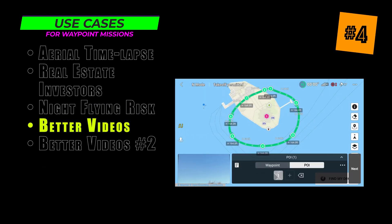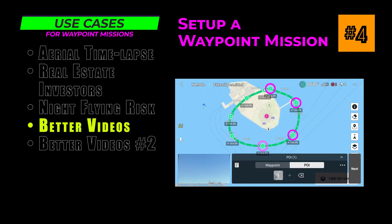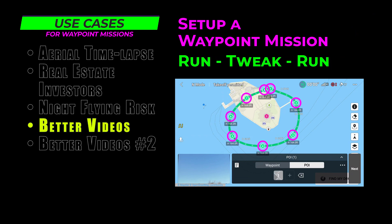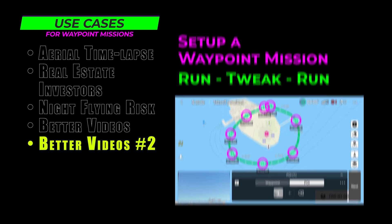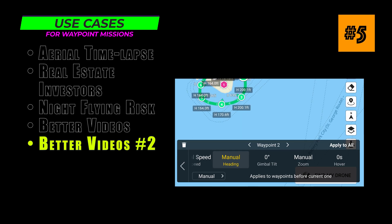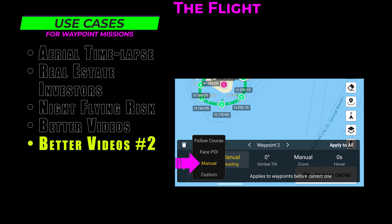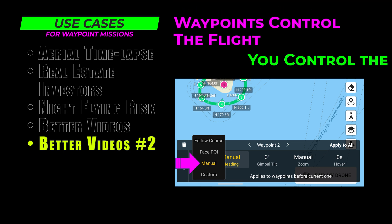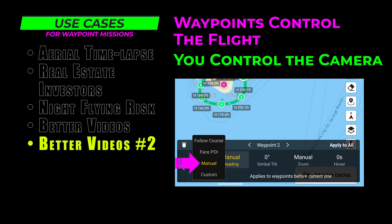Instead of just flying the drone manually, you might consider setting up a quick Waypoint mission to get that perfect shot. That way, you can run it, tweak it, and run it again and again, tweaking it as you go until you're 100% satisfied. Along the same theme of getting that perfect shot, there are some settings which allow you to set up the Waypoint mission to just control the flying of the drone, allowing you to focus on manually controlling the gimbal and camera.